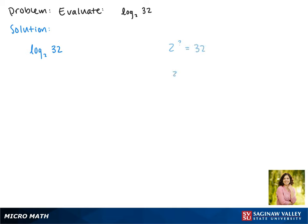Since 2 squared is 4, 2 to the third is 8, 2 to the fourth is 16, and 2 to the fifth is 32 — since 2 to the fifth power is 32, the answer to log base 2 of 32 is 5.